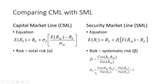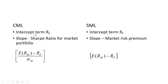The beta for the market equals 1, because the covariance of the market with itself is its variance divided by its variance. The intercept term for both lines is the same — the risk-free rate. But the slope of the capital market line is the Sharpe ratio for the market portfolio: (expected return of the market minus the risk-free rate) divided by the standard deviation of the market. The slope of the security market line is the market risk premium — the difference between the expected return of the market and the risk-free rate.